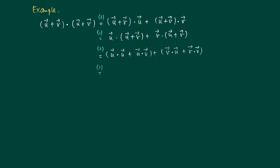So we get the dot product u·u, and since this equals u·v, we get 2(u·v) plus v·v.